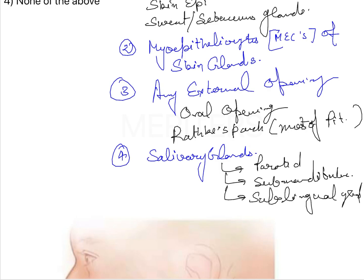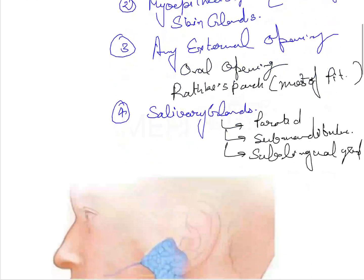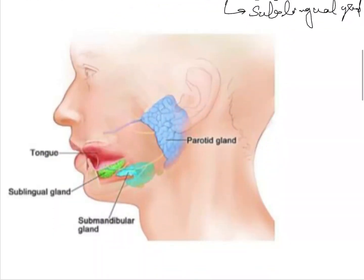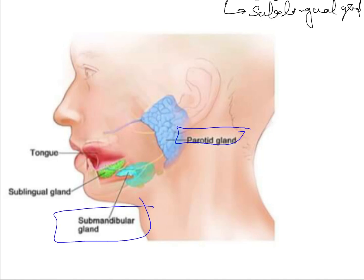We can see this in the figure here — the parotid gland, the submandibular gland, the sublingual gland, the tongue, and various other things which are derived from the ectoderm.